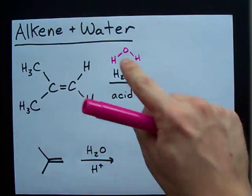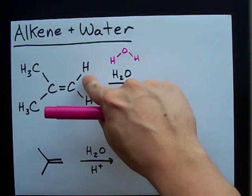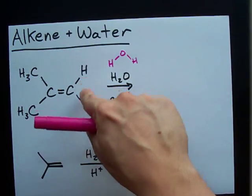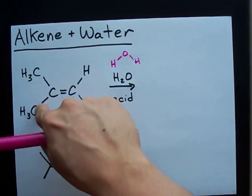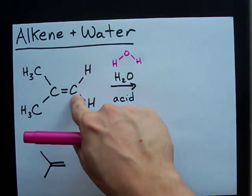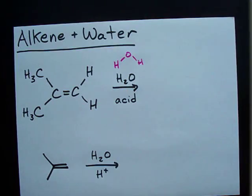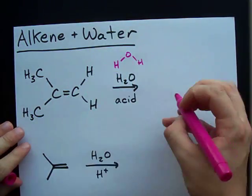The trick is that whichever side has more bare hydrogens on it, like this carbon has two H's, this carbon doesn't have any H's attached directly to it. Whichever carbon has the most H's gets the bare H from the water. Here's what I mean. Let's take a look.